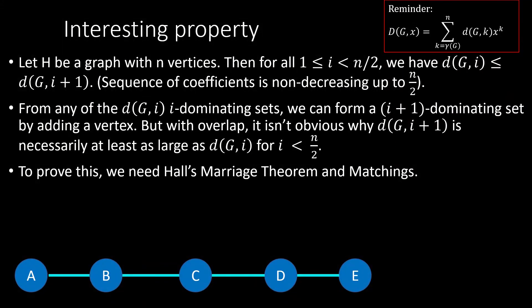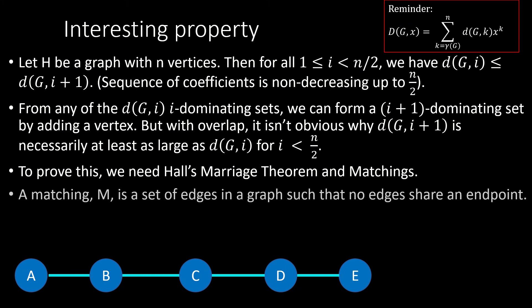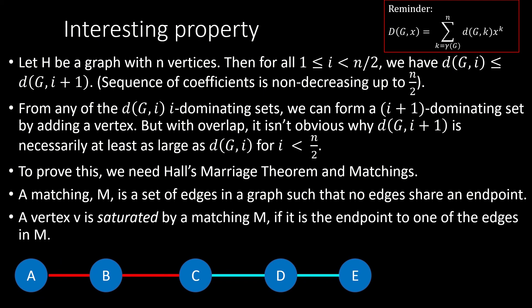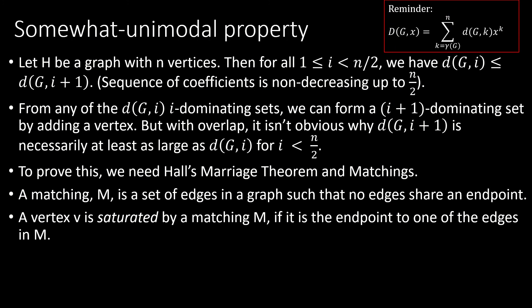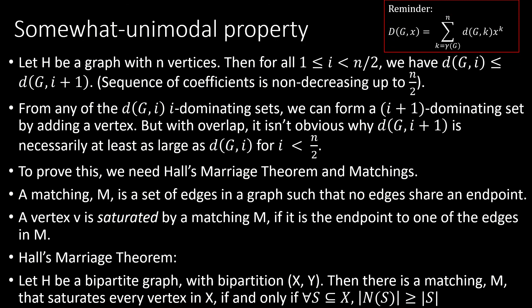The proof requires Hall's marriage theorem and the concept of matchings. A matching in a graph is a set of edges such that no edges share an endpoint. A vertex is saturated by a matching if it is an endpoint of some edge in that matching; otherwise it is unsaturated. Hall's marriage theorem states: let h be a bipartite graph with bipartition X, Y. Then h contains a matching that saturates every vertex in X if and only if, for all subsets S of X, the number of vertices in the neighborhood of S is greater than or equal to the size of S.